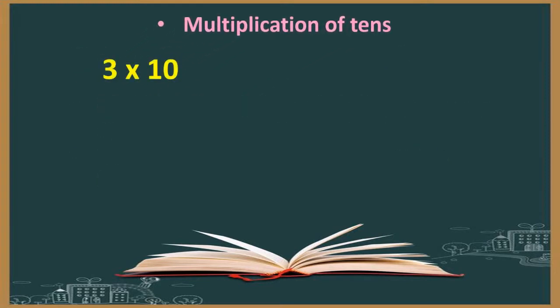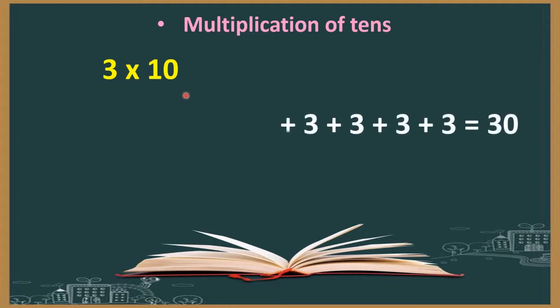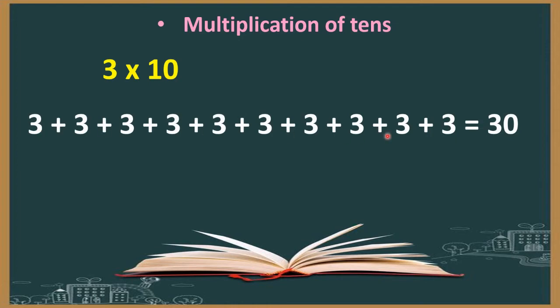So students, now we are going to learn multiplication of tens. 3 into 10. Multiplying a number by 10 means taking 10 times that number. So as you can see, 3 is added 10 times.